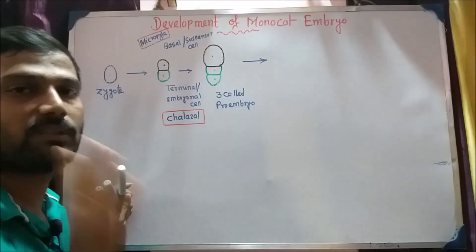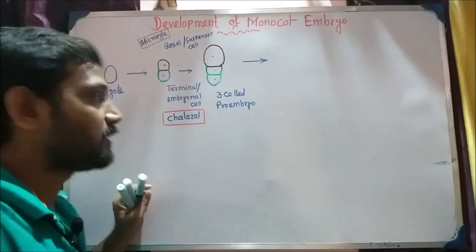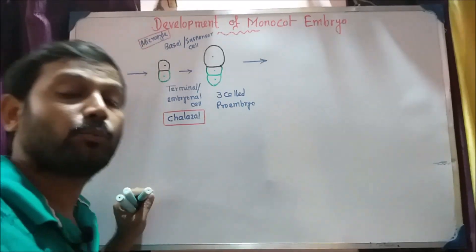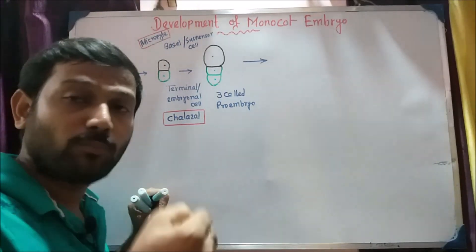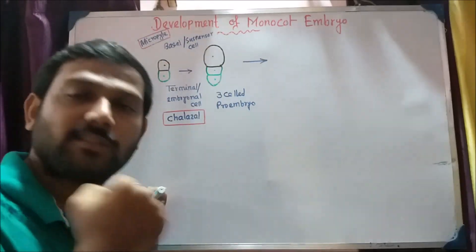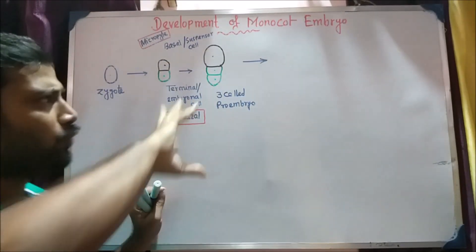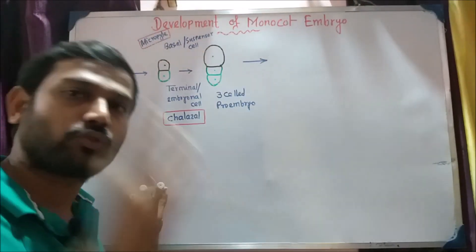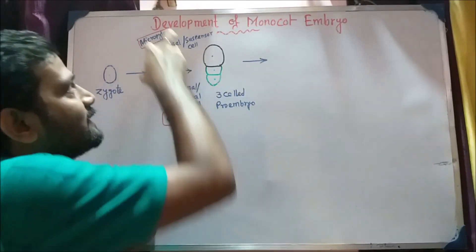We have to use the micropyle. This is the first thing to do with the guttae. There are some different types and micropyle sides.